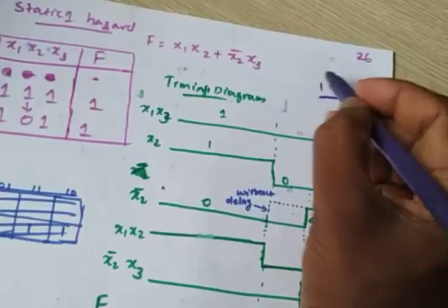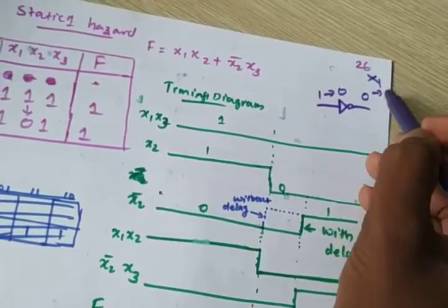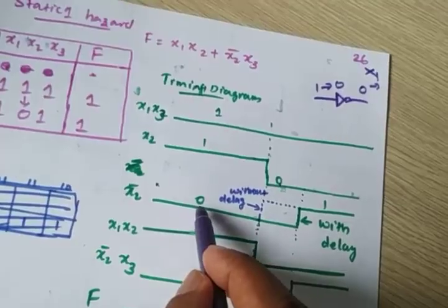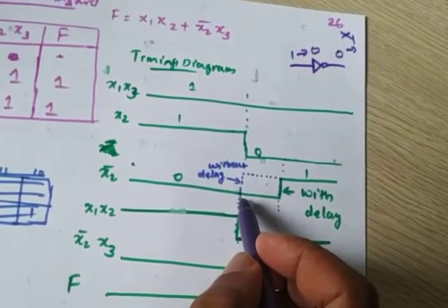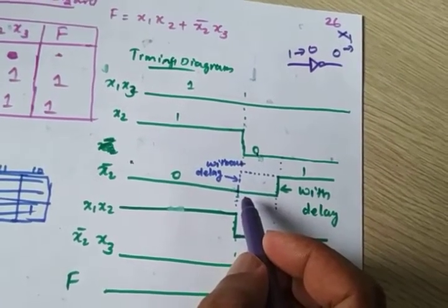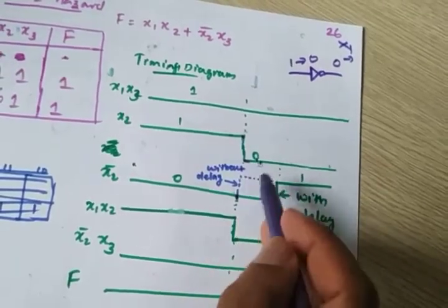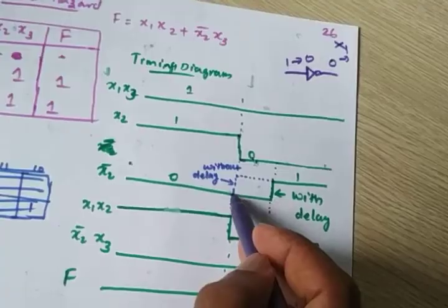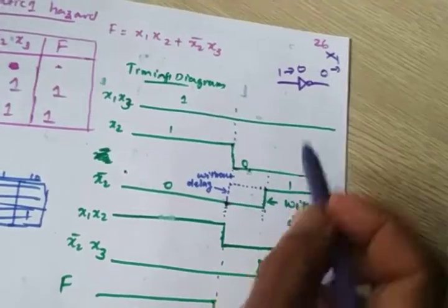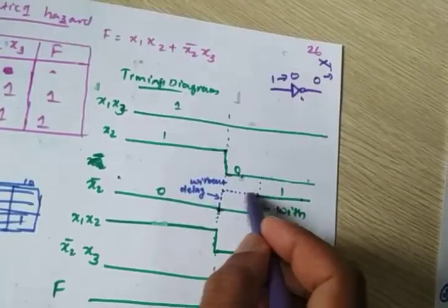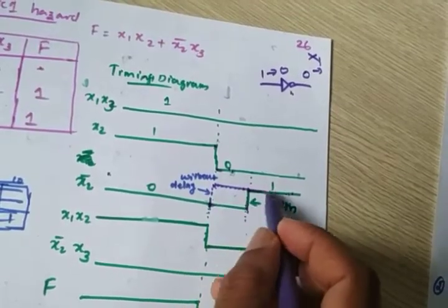When 1 changes to 0 — 0 should change to 1 at the NOT gate output. But this does not happen immediately. Why? Because due to the propagation delay — the time taken for a signal to get into and out of the IC, or out of the gate. If there is no propagation delay at this gate, the graph would change immediately. But due to propagation delay, only after some time does it go to 1.